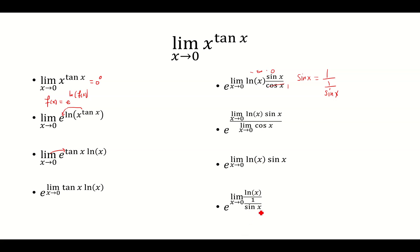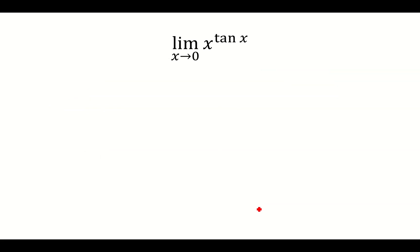So now we have 1 over 1 over sine of x. This is negative infinity over, well, sine goes to 0, so that's going to be infinity. So you use L'Hopital's rule.